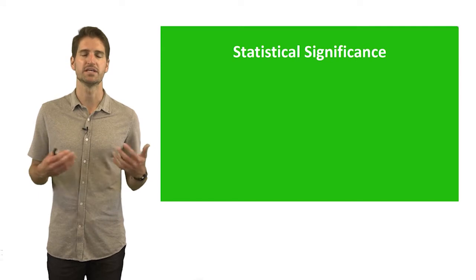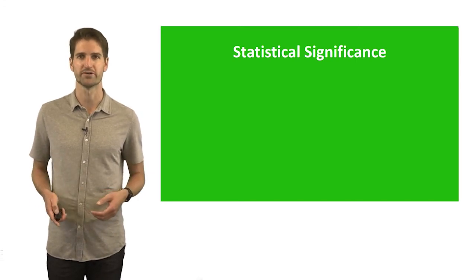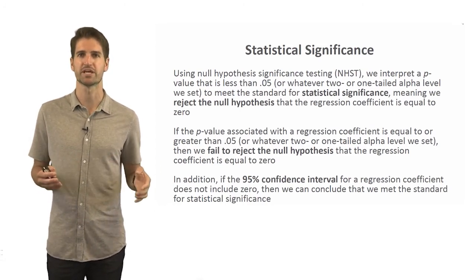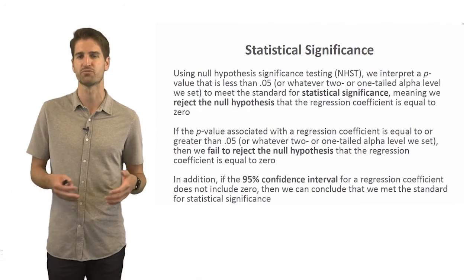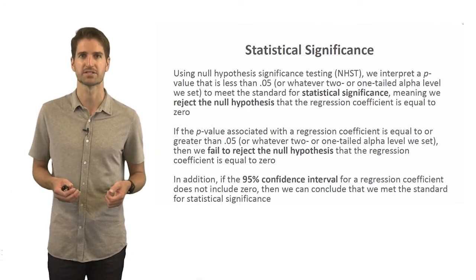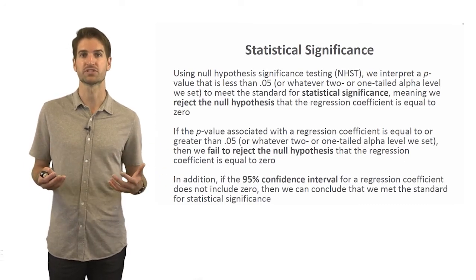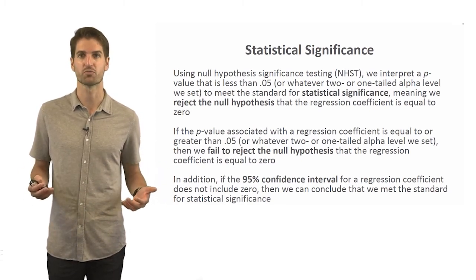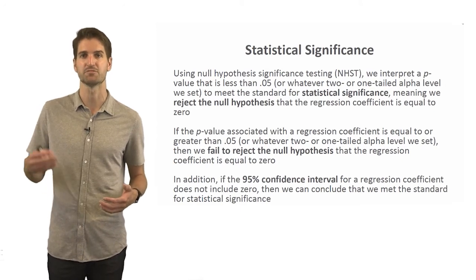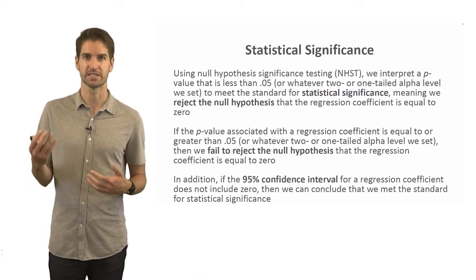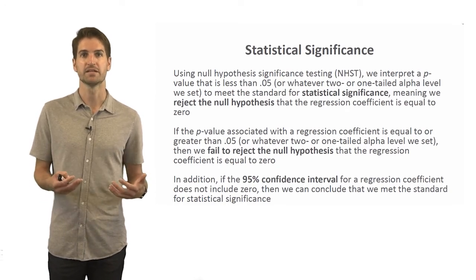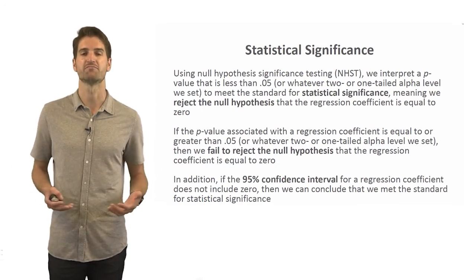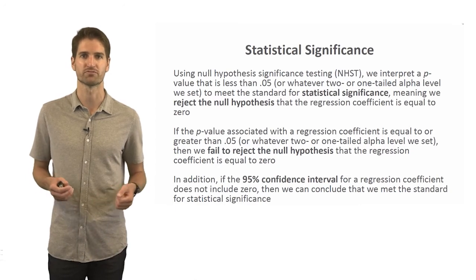Let's talk about statistical significance in the context of a simple linear regression model. If we're using null hypothesis significance testing and we've set the alpha value at 0.05 — which is pretty conventional — and it's a two-tailed test, then if we can meet that standard for statistical significance, we reject the null hypothesis that a regression coefficient is equal to zero. We would conclude that the regression coefficient does not seem to be equal to zero and is significantly different from zero. We reject the null hypothesis if our p-value is less than alpha of 0.05.